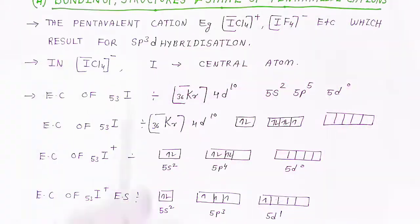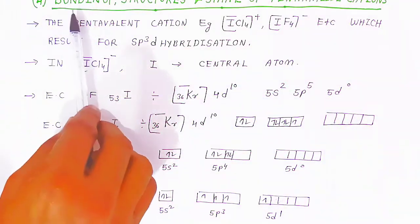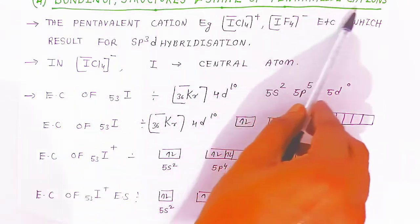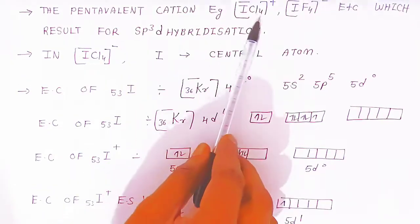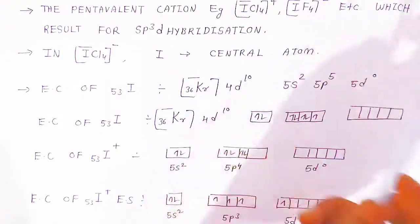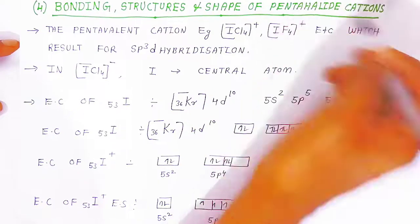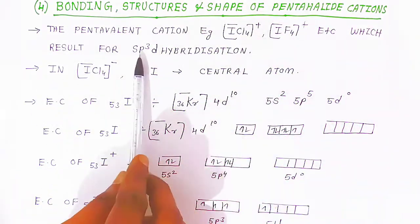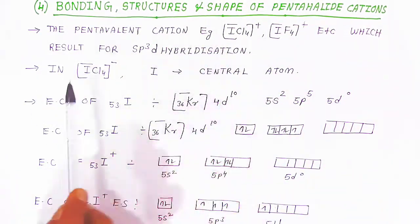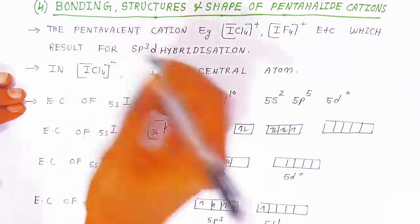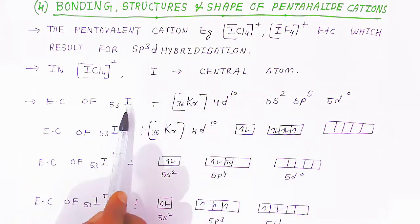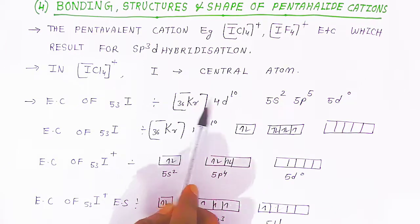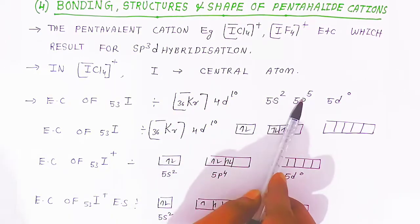Now we are going to see the bonding, structure and shape of the pentavalent cations. The pentavalent cations — examples ICl₄⁺, IF₄⁺ — are formed because of sp³d hybridization. Here iodine will be the central atom. The electronic configuration of iodine 53 is [Kr]36, 4d¹⁰, 5s², 5p⁵, 5d⁰.